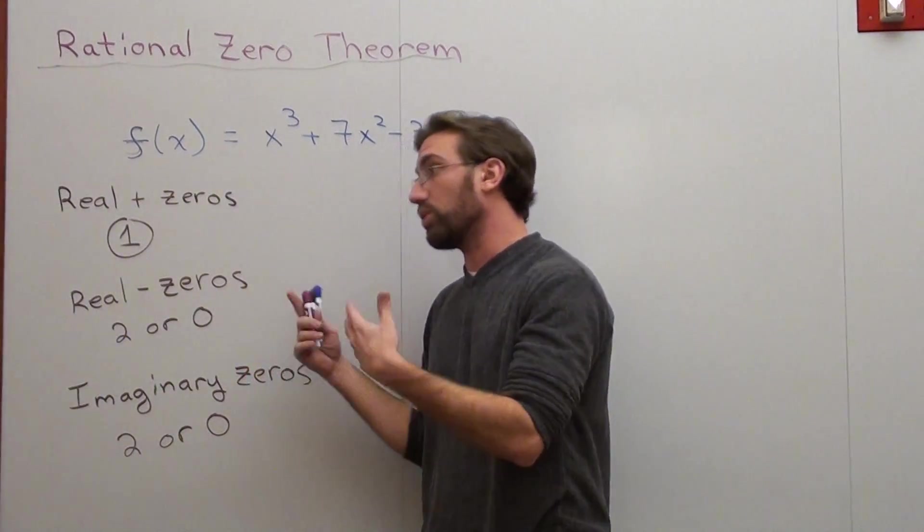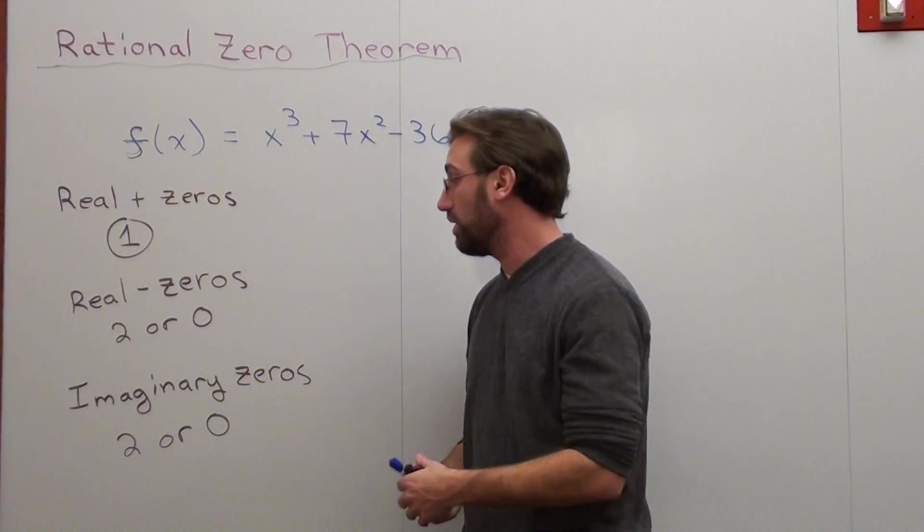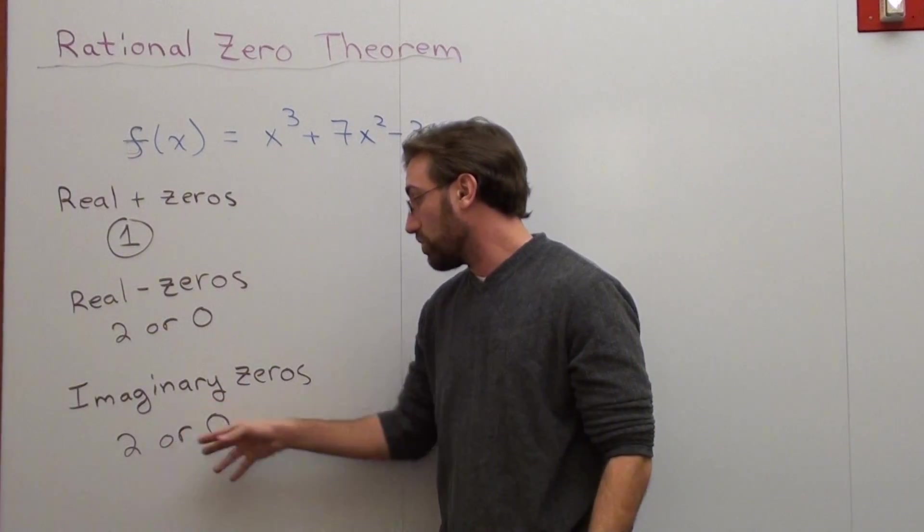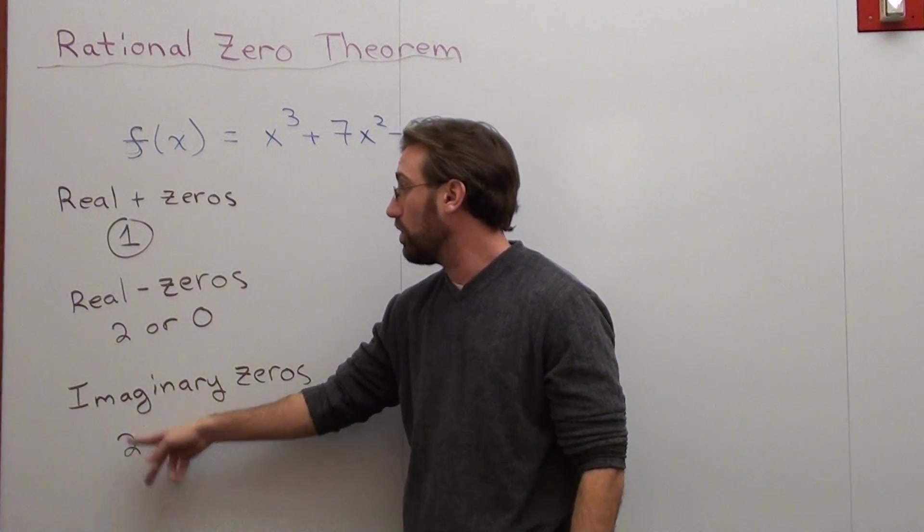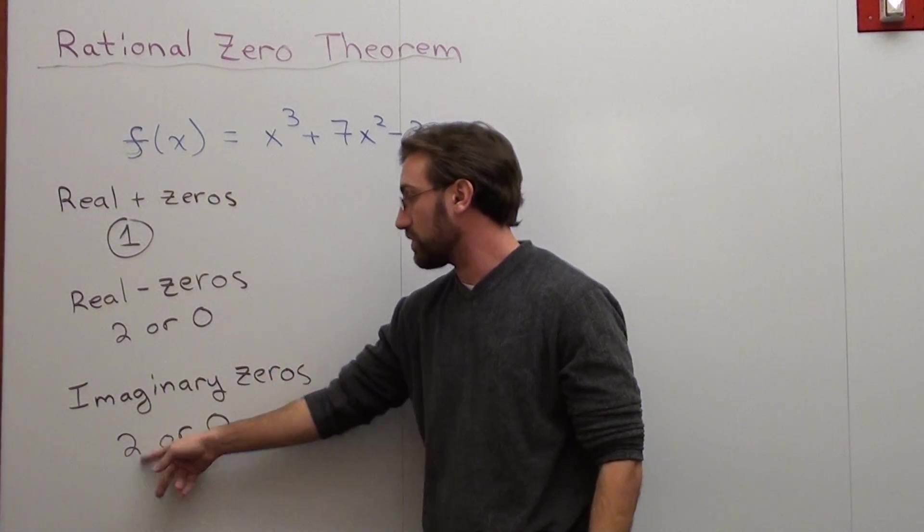Two or zero real negative zeros, I don't actually know, and then two or zero imaginary zeros. It has to add up to three, so it could be one, two, two, or it could be one, zero, two.